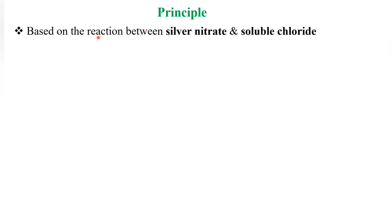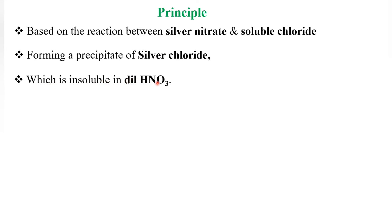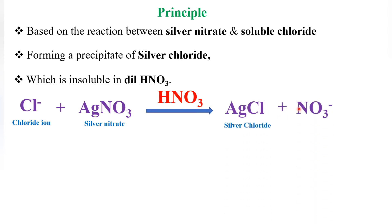Now we will see the principle of this limit test for chloride. It is based on the reaction between silver nitrate and soluble chloride, forming a precipitate of silver chloride that is insoluble in dilute nitric acid. The chloride ion is treated with silver nitrate in the presence of nitric acid, giving silver chloride and nitrate ions. This silver chloride is responsible for the opalescence.